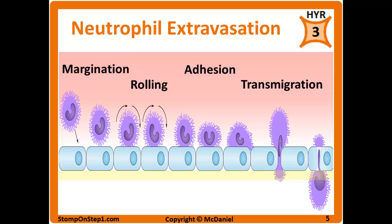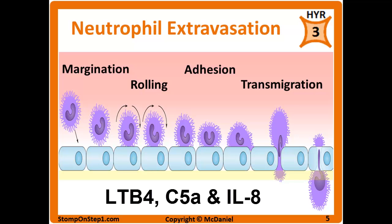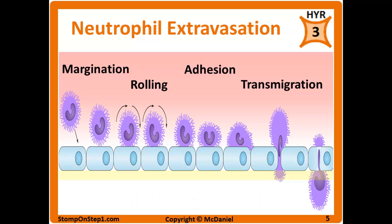Transmigration is when the neutrophil squeezes between adjacent endothelial cells to exit the vessel. Once through the vessel wall and into the tissue, it proceeds to migration — traveling toward the specific site of injury by following chemotactic factors: leukotriene B4, C5a complement, and interleukin-8 (IL-8). These chemotactic factors act as signals to bring the neutrophils to the affected area.